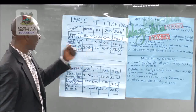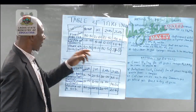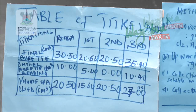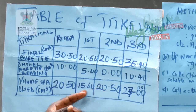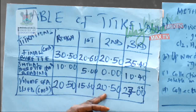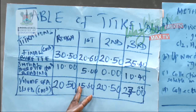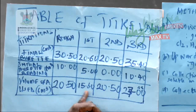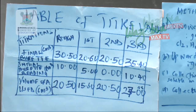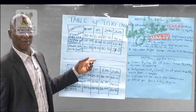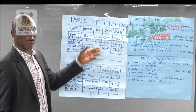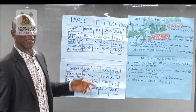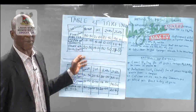Looking at this from another angle: if you use two values such as 15.60 and 20.50, you are not getting the concordant value and you are losing many marks. From that table, you are expected to score 10 marks, but there is a possibility of losing the whole 10 marks.